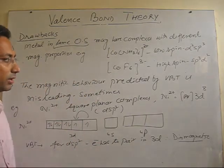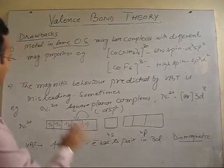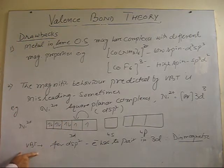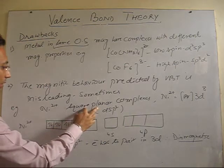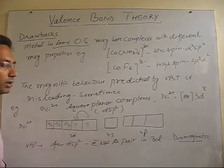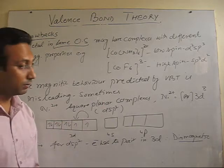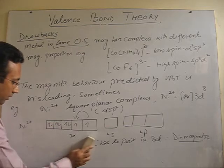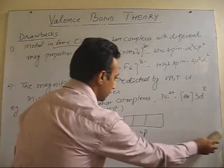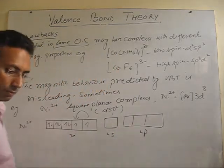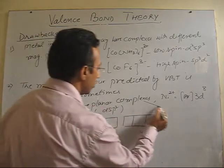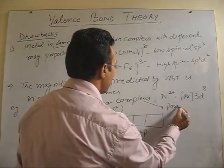But, what is the limitation here? What is the misguiding here? Usually, according to VBT, if we consider VBT only, we can generalize this. That all the square planar nickel 2 complexes are definitely going to be diamagnetic, but which is not correct. So, what happens? Sometimes, some of the complex of nickel 2, which are square planar, but those complexes are paramagnetic also.